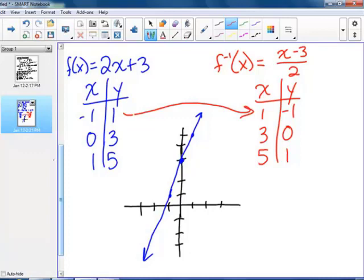So now for the inverse function, I have 1, negative 1, 3, 0, and 5, 1. So there's my inverse function. This is the inverse, this is the original.